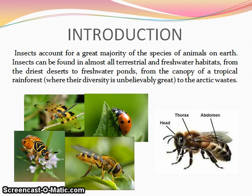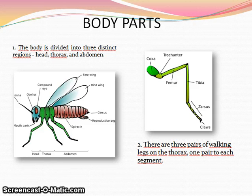The body of the typical adult insect is divided into three distinct parts, with an exoskeleton composed of a horny substance called chitin. Insects show a number of characteristics, and the three by which they are most easily recognized are the body divided into three distinct regions: head, thorax, and abdomen.